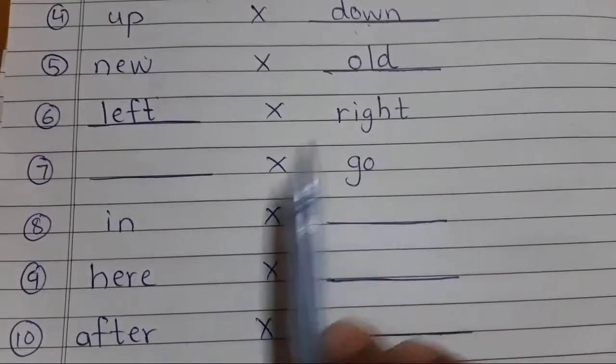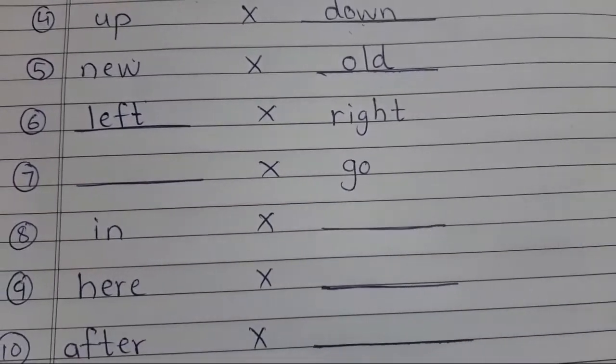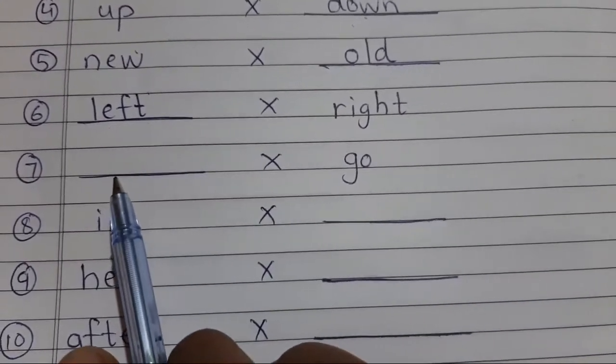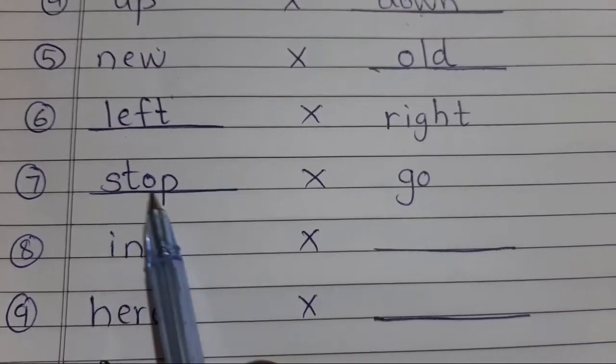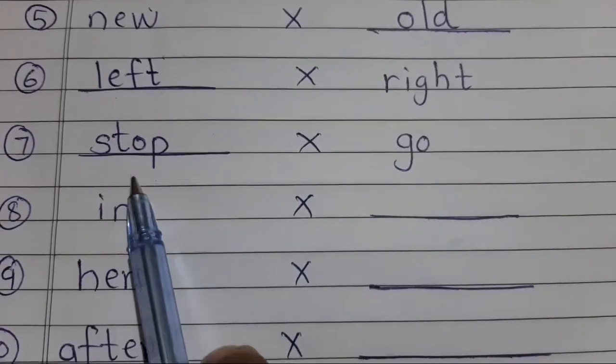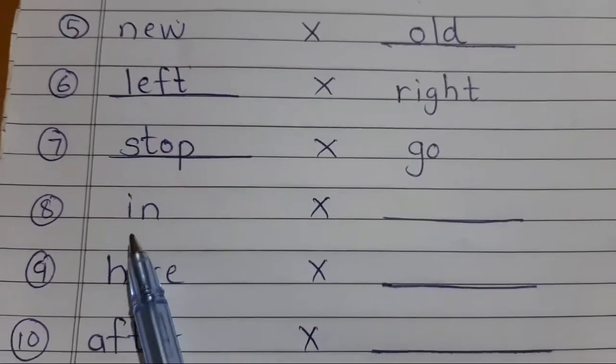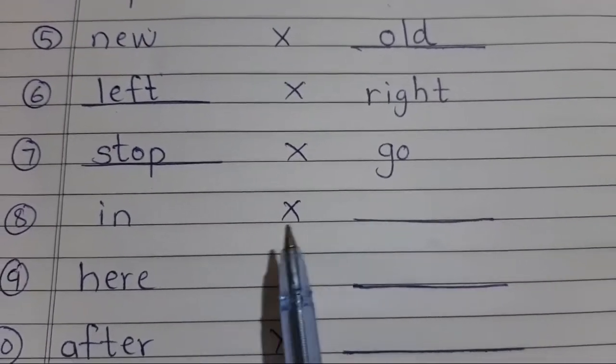Stop means ruko. So write it down, S-T-O-P, stop, S-T-O-P, stop, stop, opposite, opposite, go. Go, opposite, opposite, go. In, in means under. Under ka opposite kya, bahar, you know? Then under ya bahar, so in opposite out.